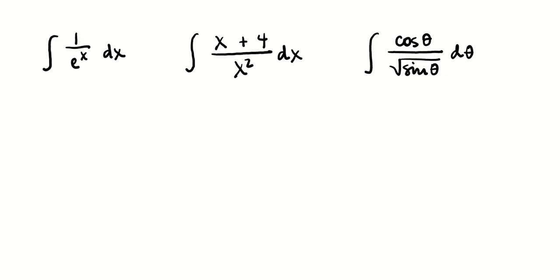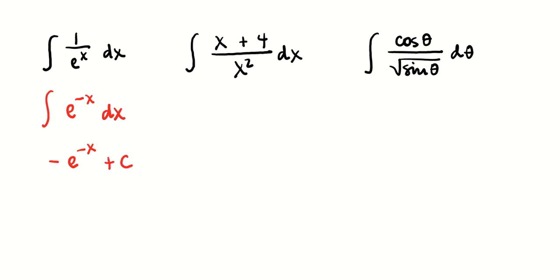But this is already something we have some experience with. If you look at the one on the left, we know how to deal with this. We can rewrite 1 over e to the x as a negative power of e, and we know how to take the antiderivative of that. It's going to be e to the negative x. We'll multiply by negative 1 to prepare for the chain rule, and add c.